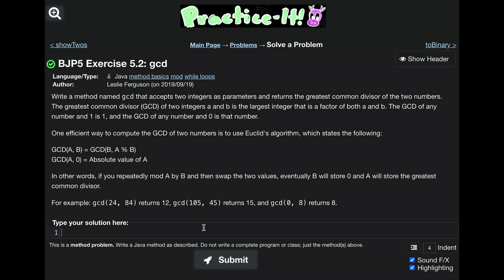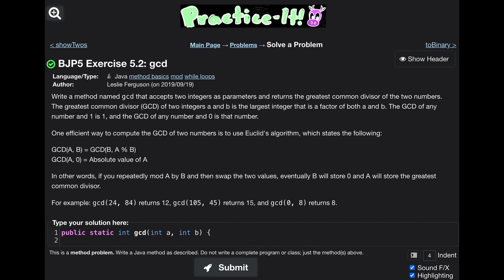So what this is saying is we need a method. We're going to make it public, we'll call it static, it's returning an integer. And then our name for the method is going to be GCD. And then we're going to take two parameters, so we're going to have int a and int b. So this is our header, and now we can write in our method.